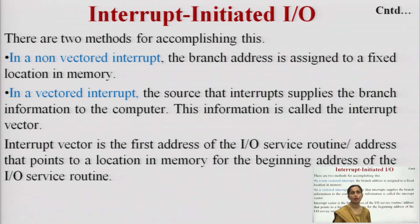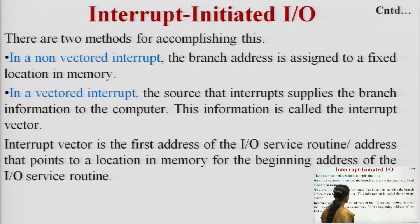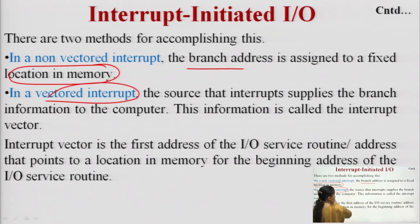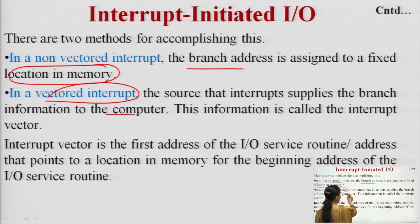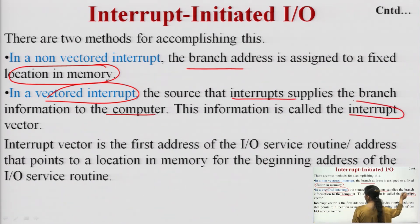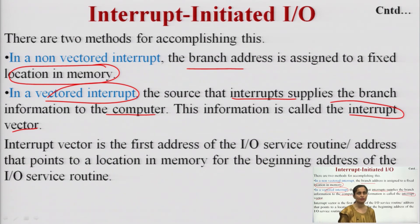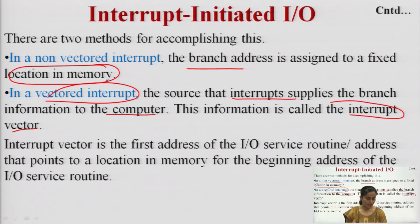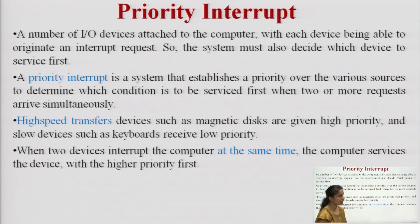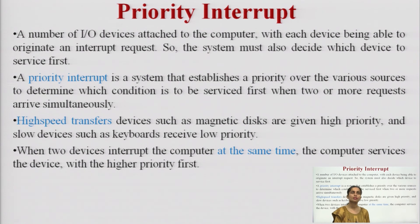There are two methods for handling the branch address. In a non-vectored interrupt, the branch address is assigned to a fixed location inside the memory. In a vector interrupt, the source supplies the branch information to the computer — this address is called the interrupt vector, which is the first address of the IO service routine or points to the beginning address of the service routine in memory. If there are many devices wanting to interrupt the CPU, that becomes a priority interrupt.